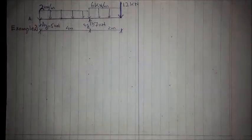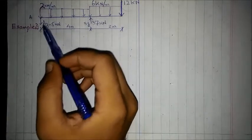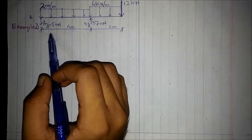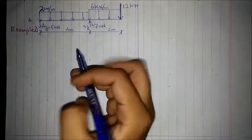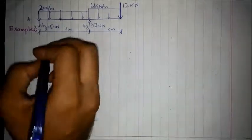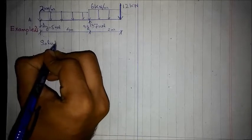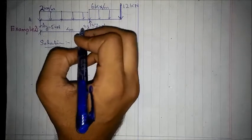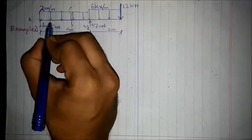We are required to find out the shear force and bending moment diagram of the following beam. We already discussed how to find out the reactions of the beam, so the reactions have already been written. This is Example 2 for drawing shear force and bending moment diagram by method of section.